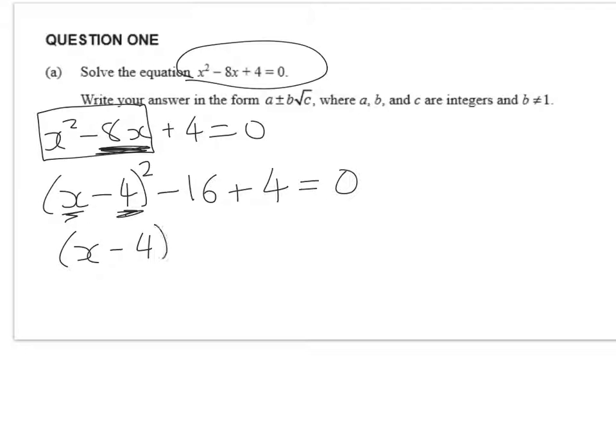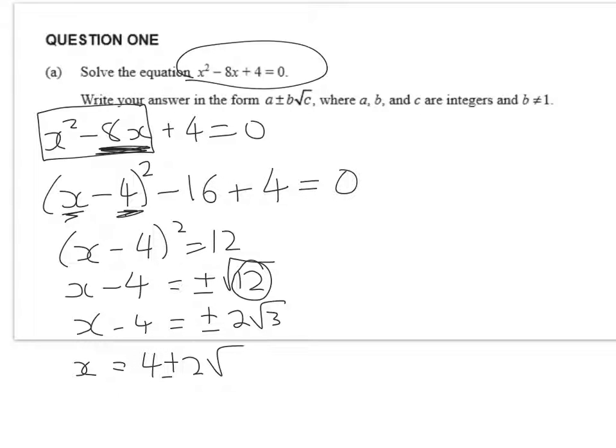Now I get x minus 4 squared equals 12. So x minus 4 is equal to either the positive or negative square root of 12, which is plus or minus 2 root 3. So x is equal to 4 plus or minus 2 root 3.